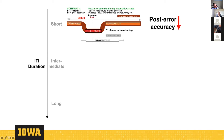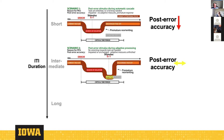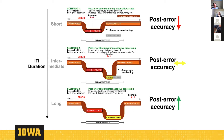At an intermediate RSI duration, you may have identified the source of the violation but the adaptive measures aren't fully designed yet — the task set is still unchanged, though you can more easily reorient to it — so post-error accuracy may be unchanged. But for a long RSI, you will see increases in post-error accuracy because you've implemented your full set of adaptive responses, retooled your task set, and reengaged with it.